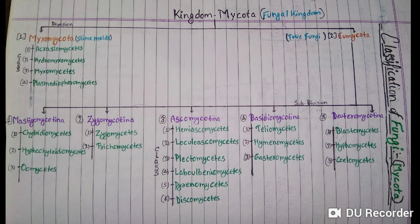The fourth subdivision is divided into three classes: first is Teliomycetes, second is Hymenomycetes, and third is Gasteromycetes. The last subdivision is Deuteromycotina, which is further divided into three classes: Blastomycetes, Hyphomycetes, and Coelomycetes. This is the total classification of fungi.